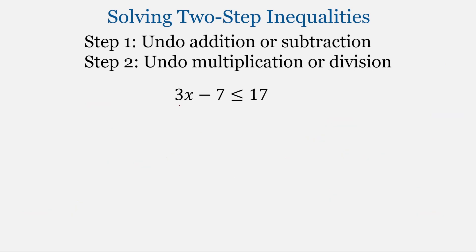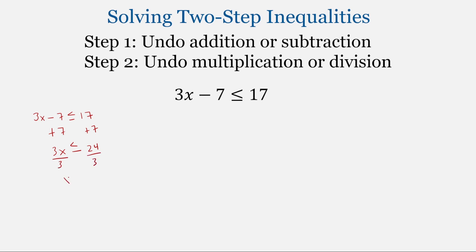Let's first solve this inequality like we did previously. We have 3x minus 7 less than or equal to 17. First we'll undo addition and subtraction — we're going to add 7 to both sides. We end up with 3x less than or equal to 24. And then we'll undo multiplication or division, so we're going to divide both sides by 3. We end up with x less than or equal to 8. This is reverse order of operations.